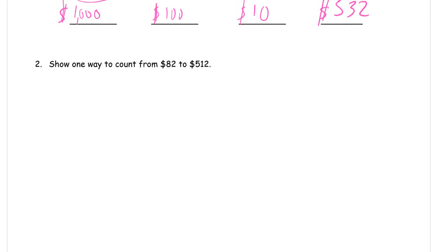Show one way to count from 82 to 512. Please don't count this entirely by ones. It's going to take you all day, and it's going to be an incredible amount of work. And you'll probably make a mistake in there somewhere. We're going to start at 82. And here's my strategy.